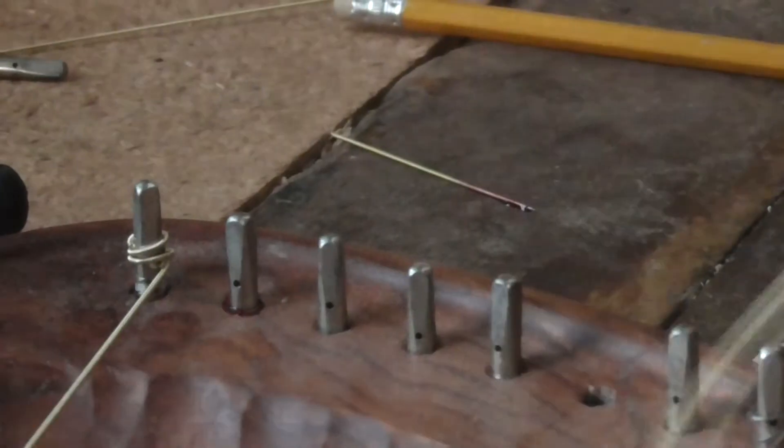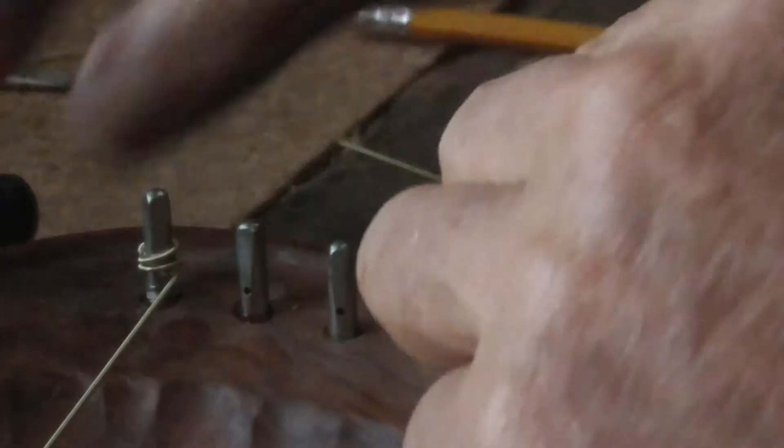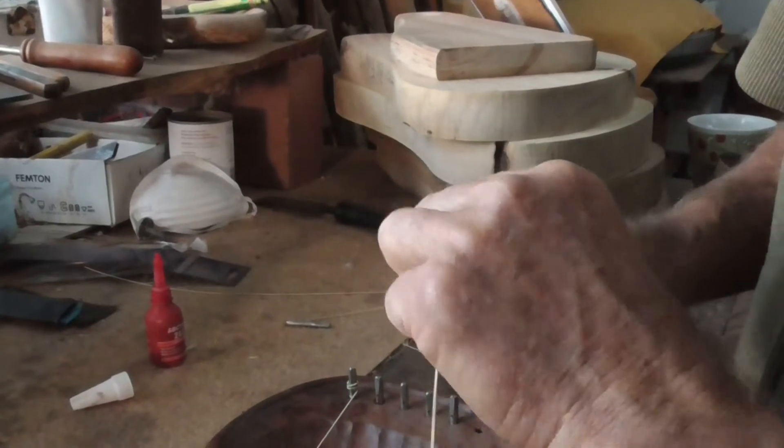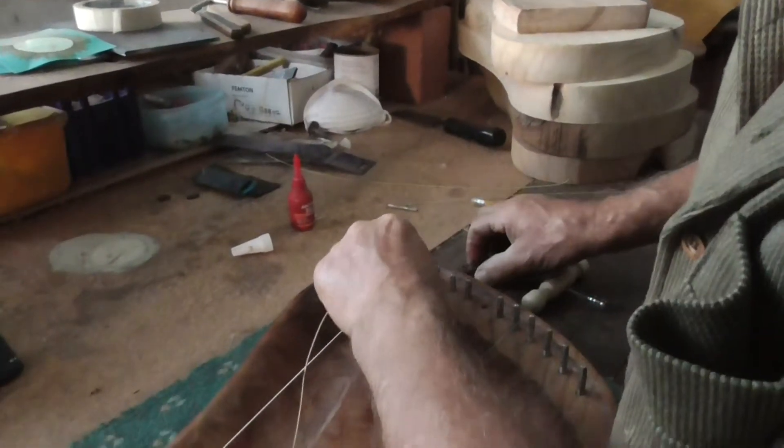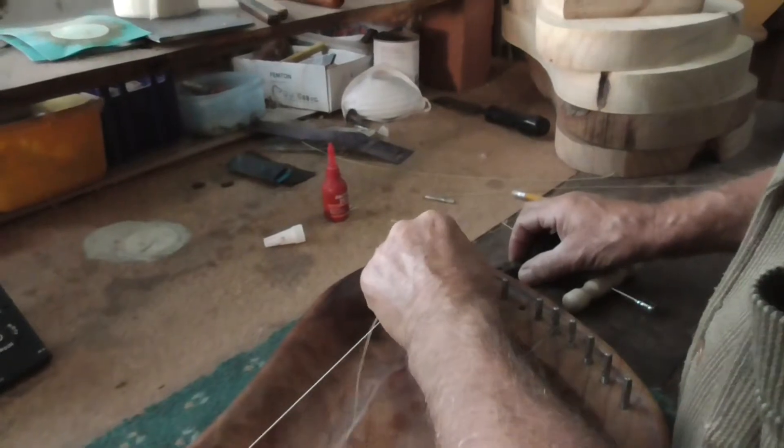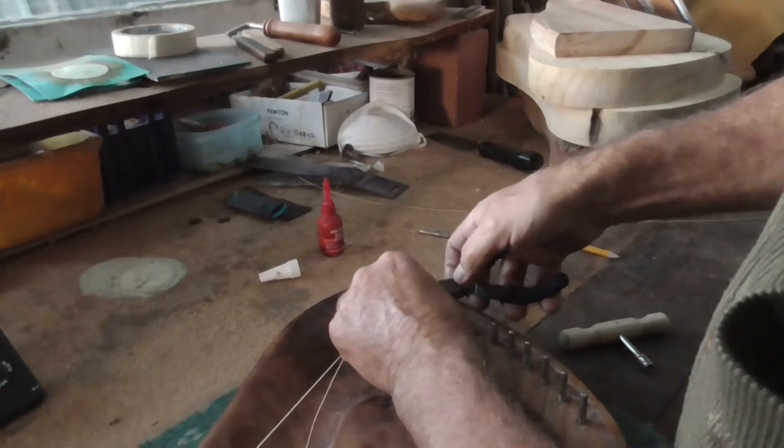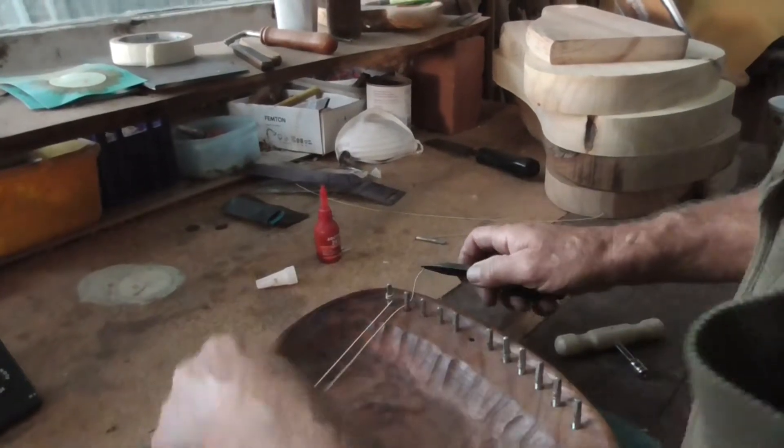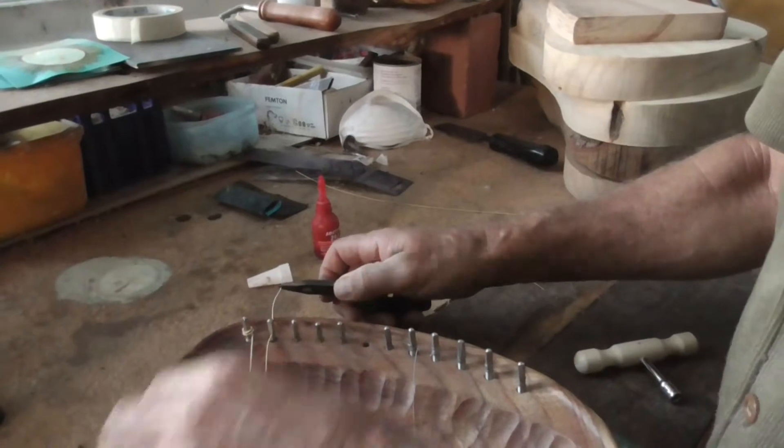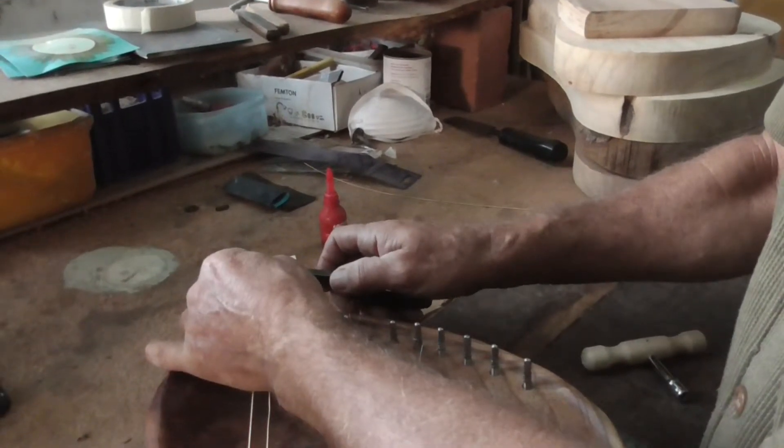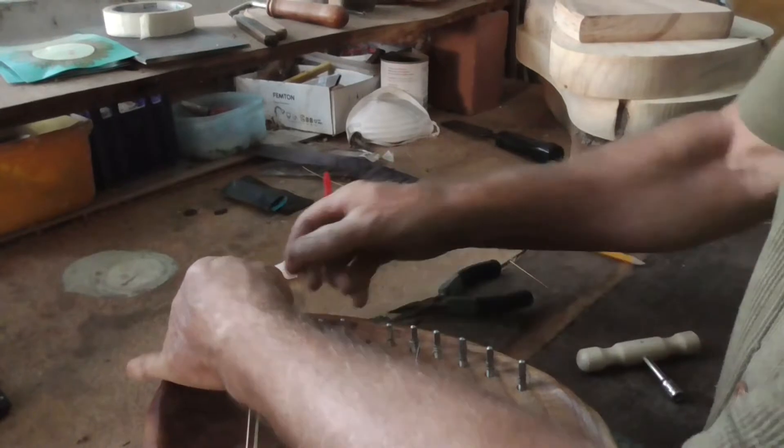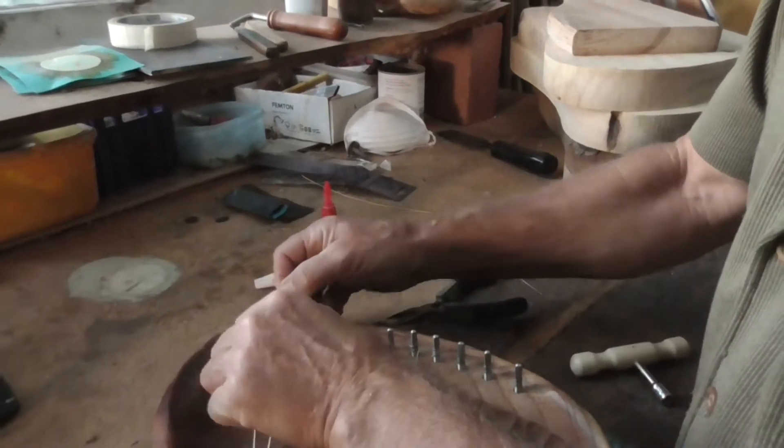Now we can have another go. I usually cut out that little L because the second time it doesn't work otherwise. Straighten the string and start with the same procedure we had before, creating a little L downwards, pulling it back.